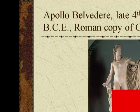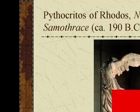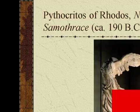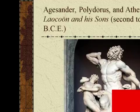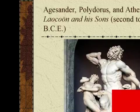Apollo Belvedere, late 4th century BCE, a Roman copy of a Greek original. Nike of Samothrace, 190 BCE. Laocoön and His Sons by Agesander, Polydorus, and Athenodorus of Rhodes, 2nd to 1st century BCE.